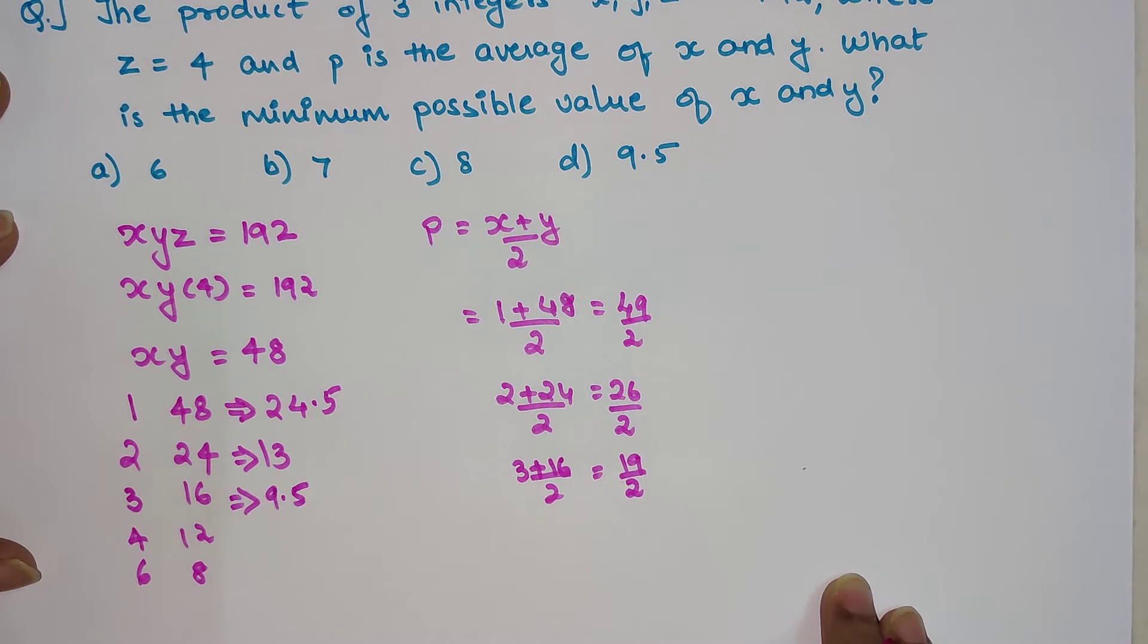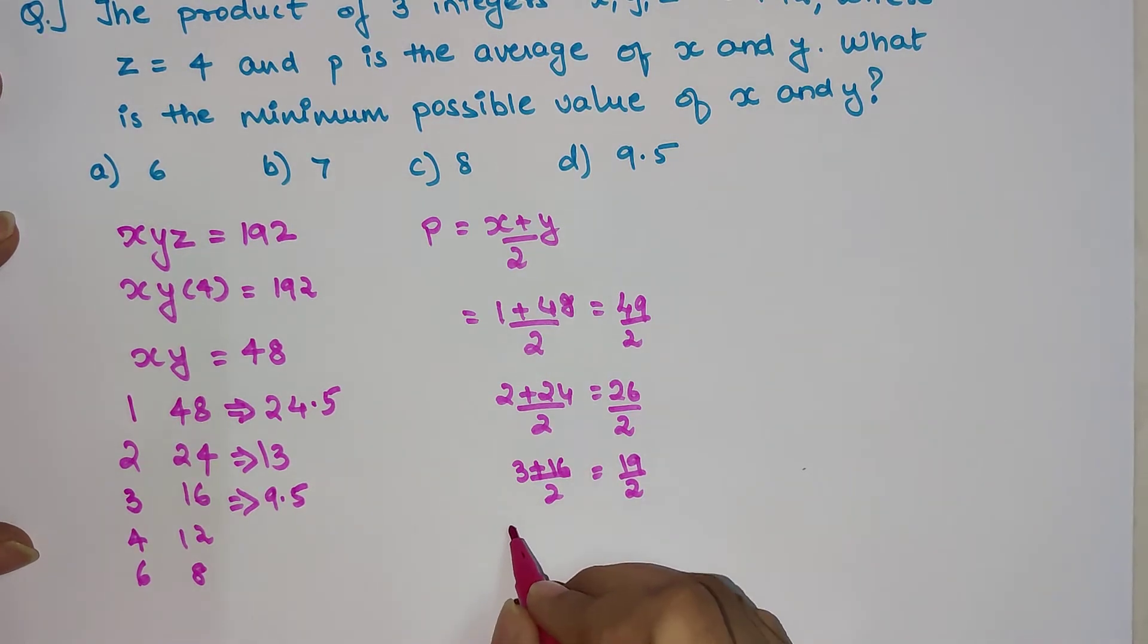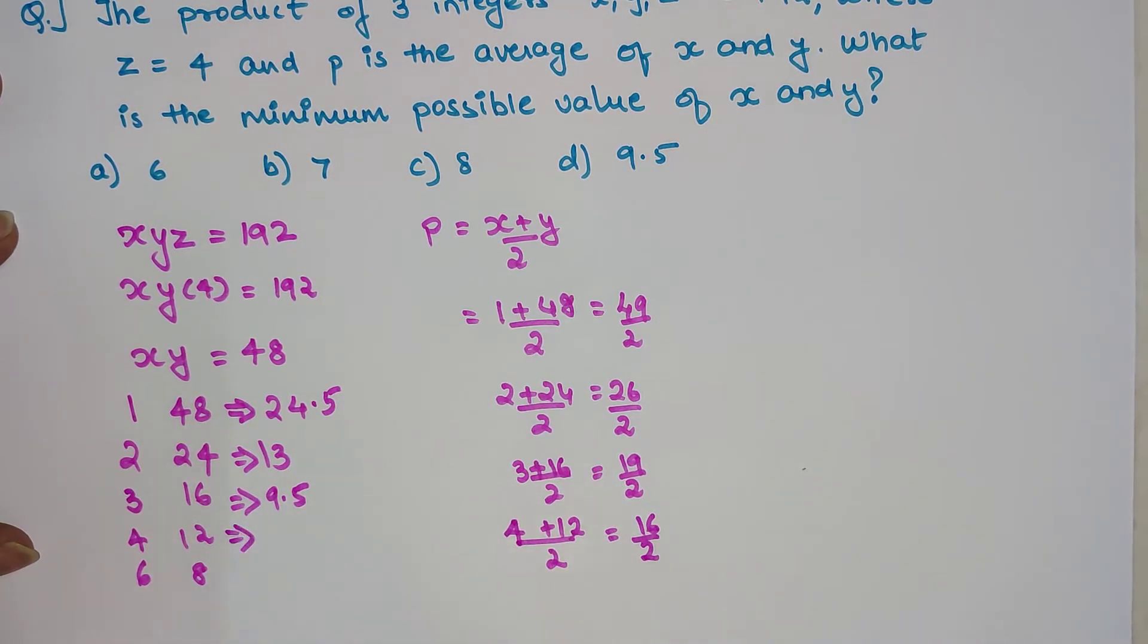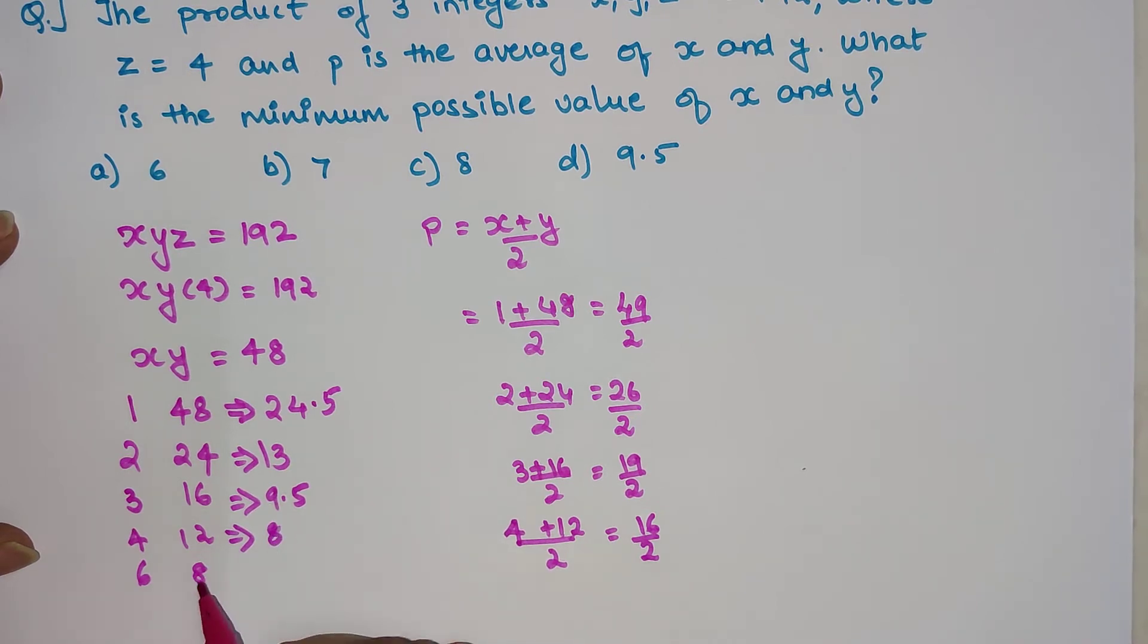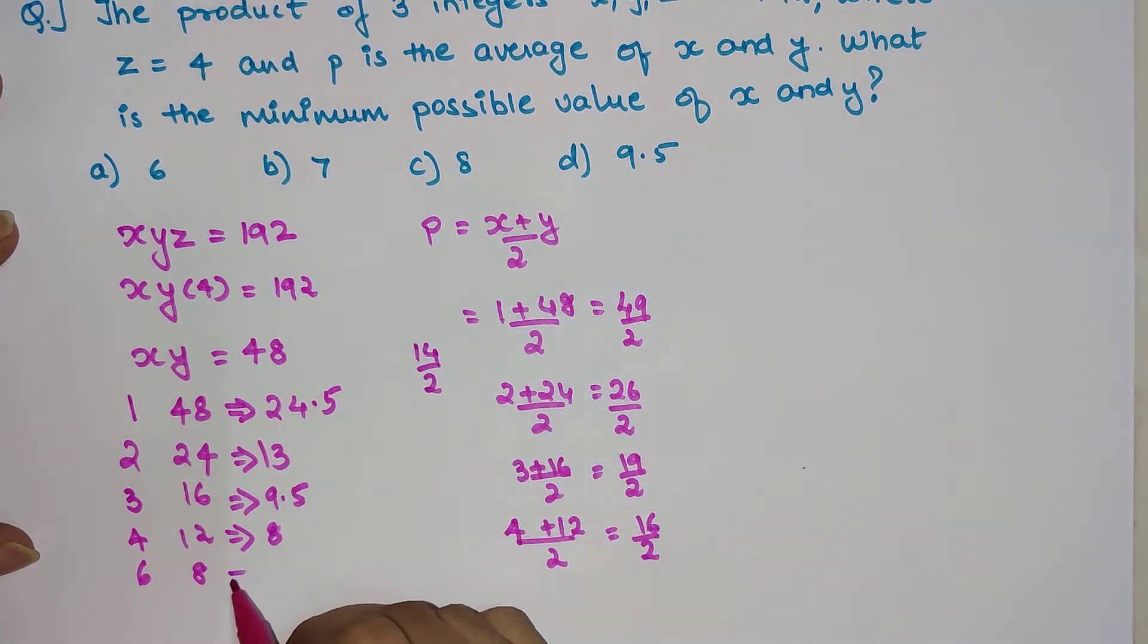Students, if you like the way I am explaining, please go ahead and hit the like button because that gives me tremendous encouragement in doing these kinds of videos. So 4 plus 12 upon 2, that gets you 16 upon 2, that gets you 8. And 6 plus 8, that would be 14 upon 2, that gets you 7.